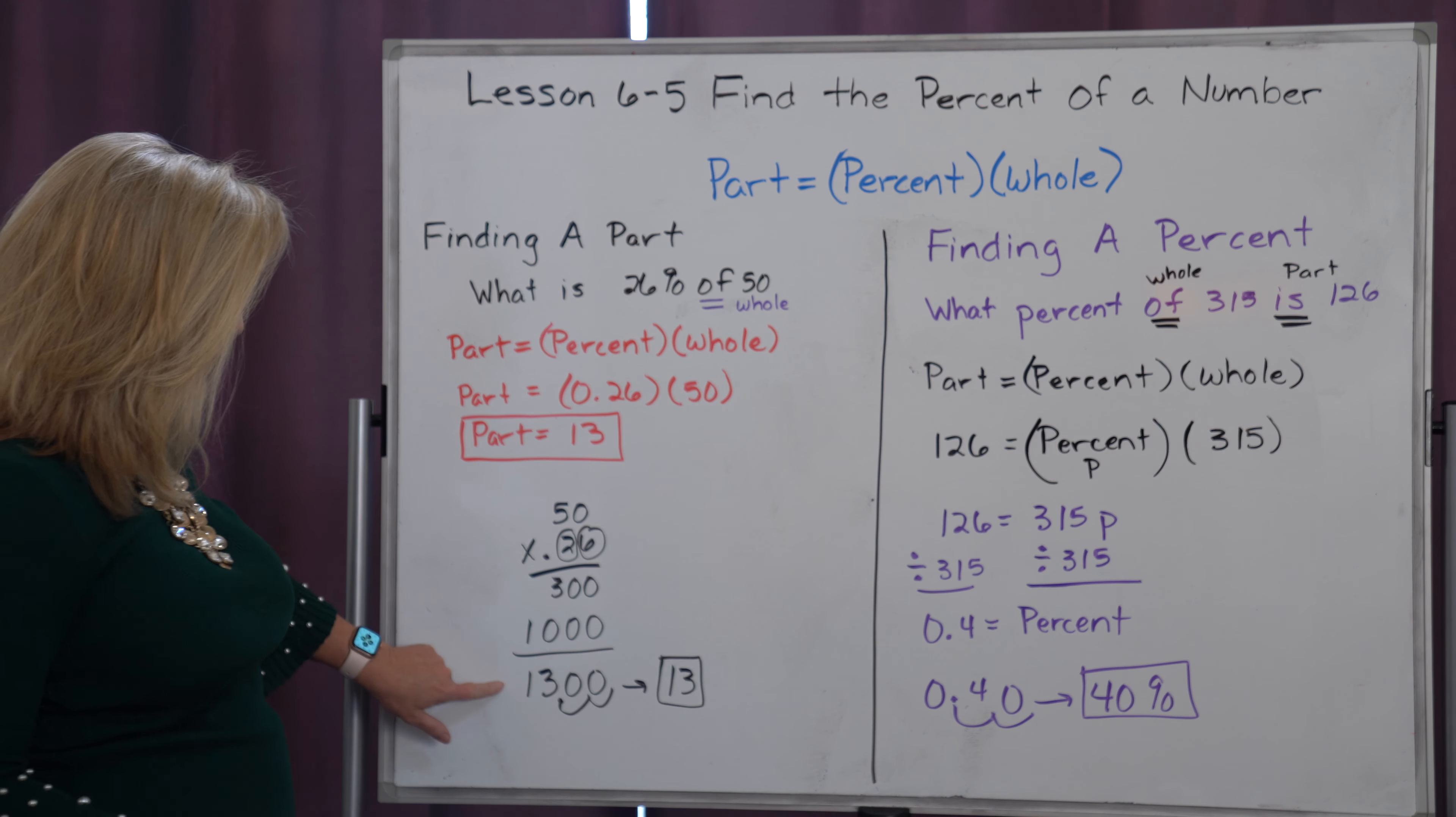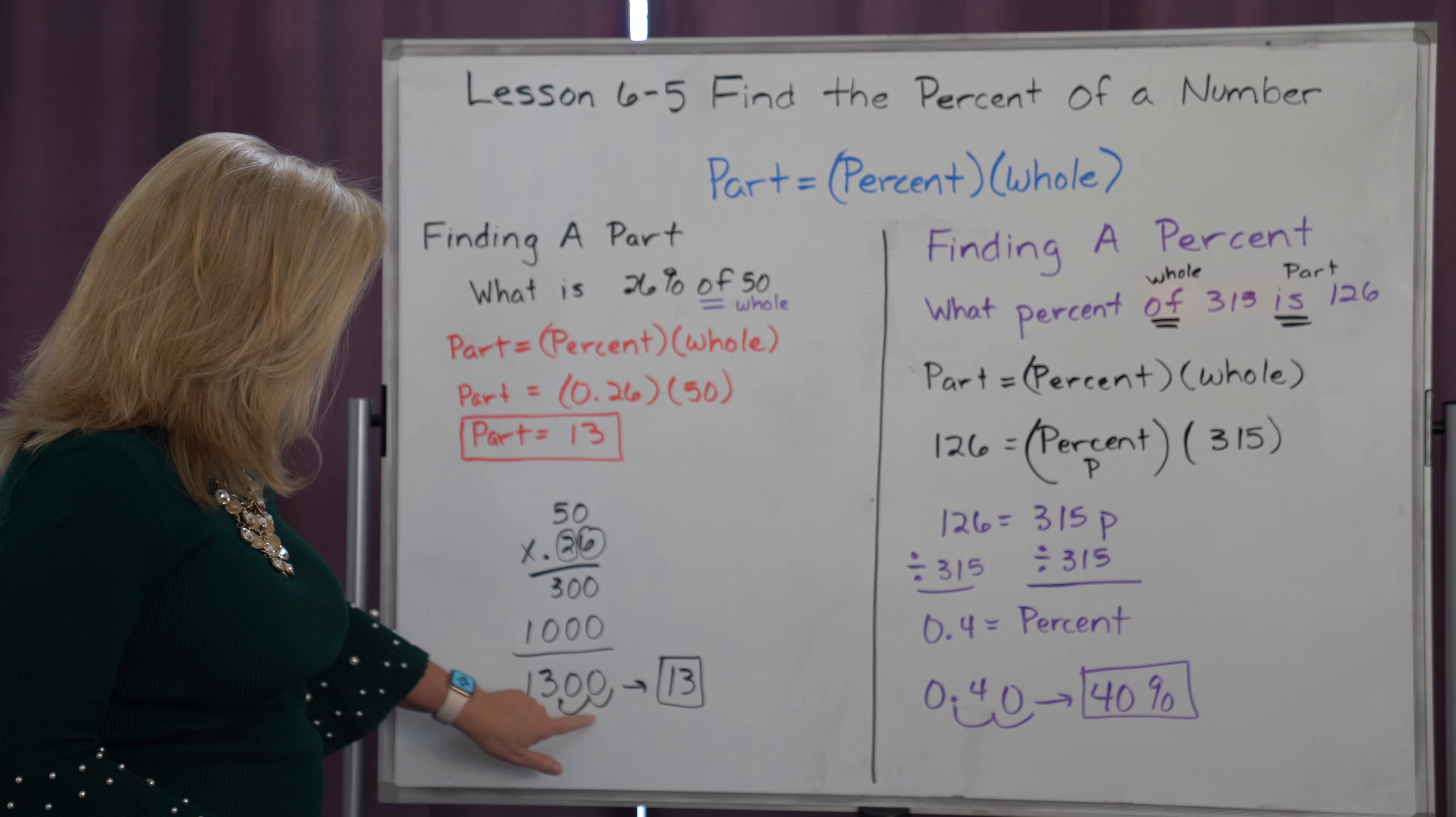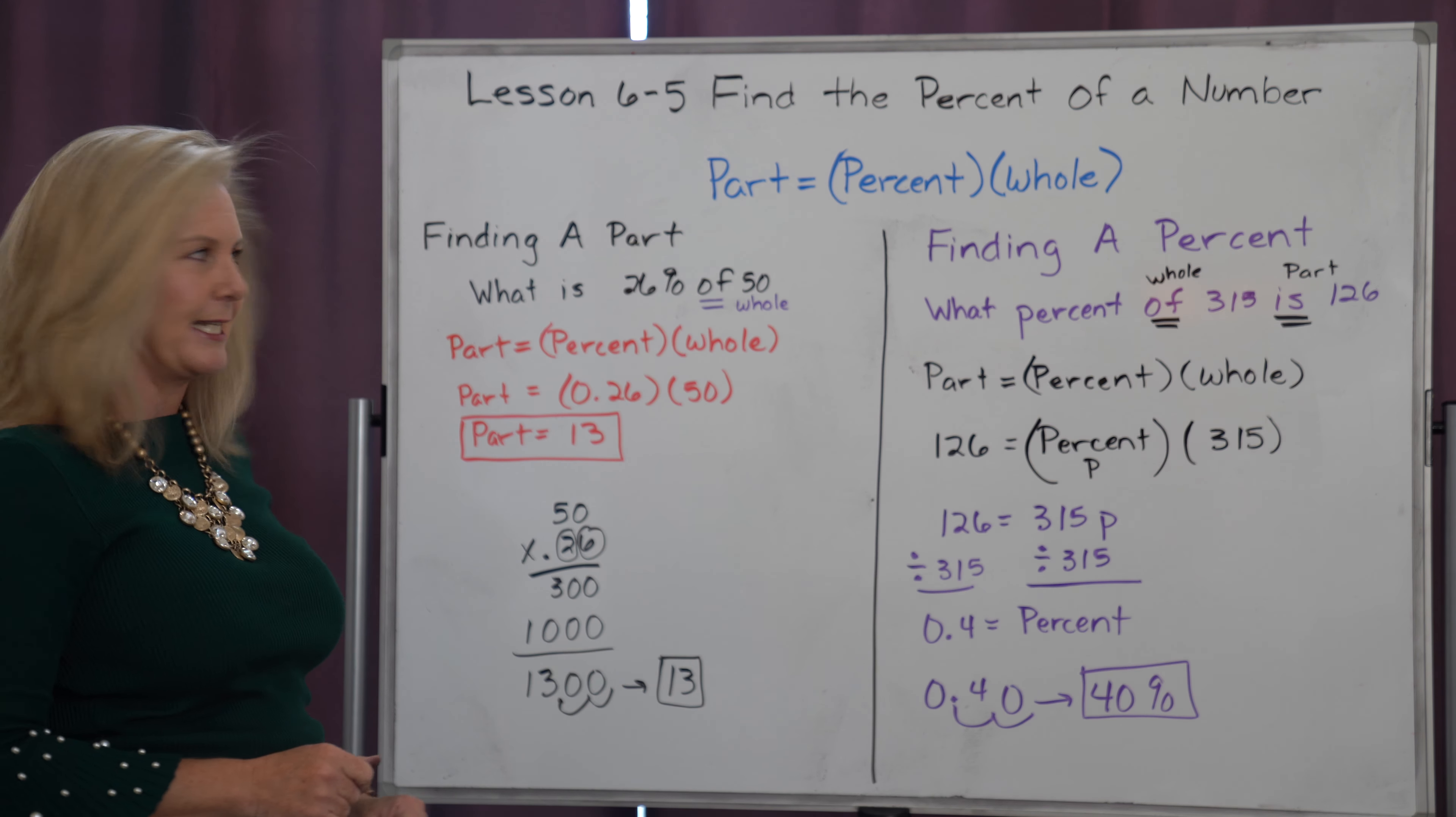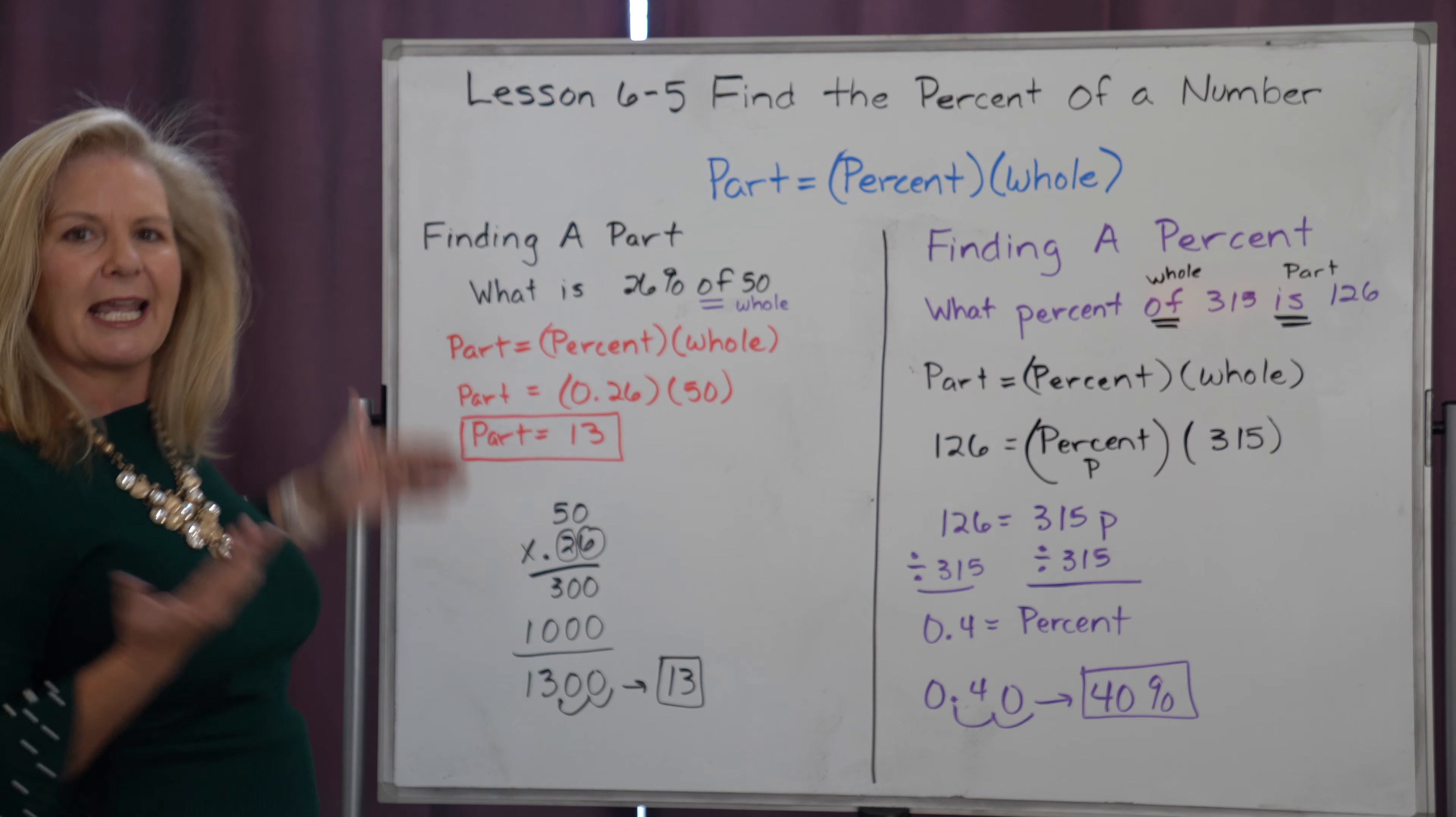And remember when you multiply, count the number of digits to the right of the decimal point and you're going to move that decimal point back two places in order to get that 13. So what is 26 percent of 50? It's 13.